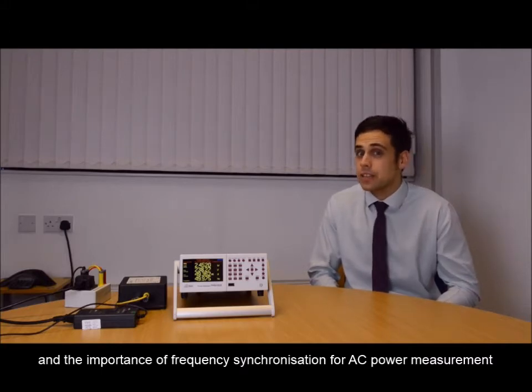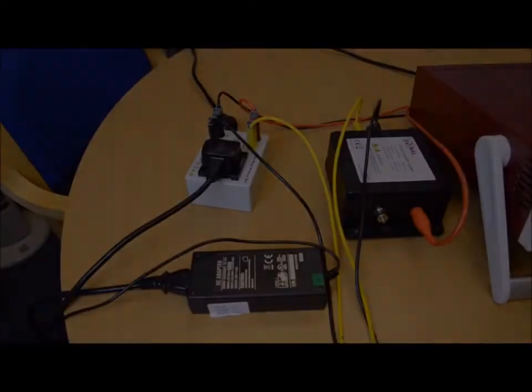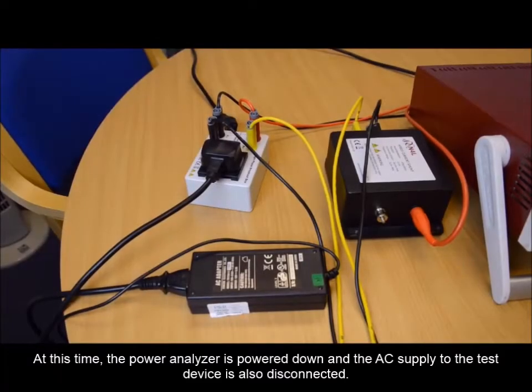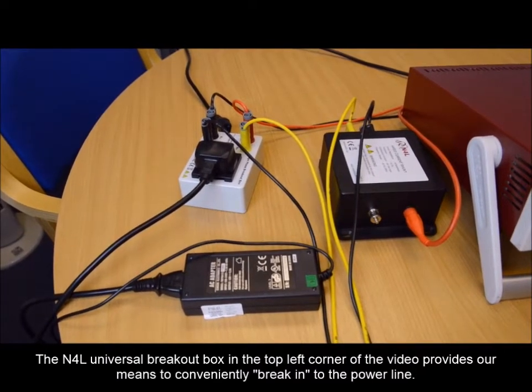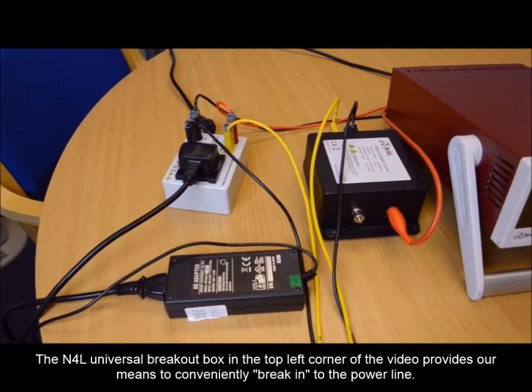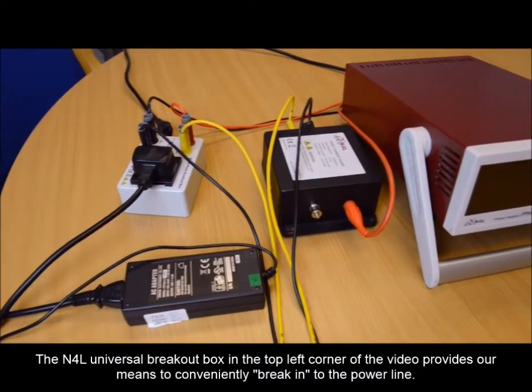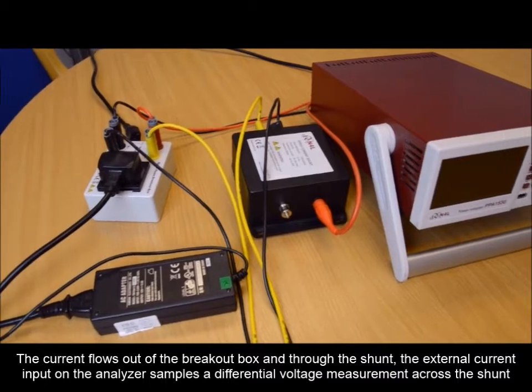At this time, the power analyzer is powered down and the AC supply to the test device is also disconnected. The universal breakout box in the top left corner of the video provides our means to conveniently break into the power line. The current flows out of the breakout box and through the shunt.